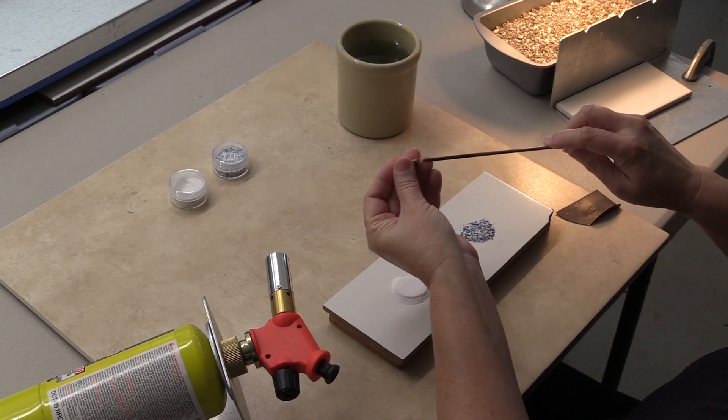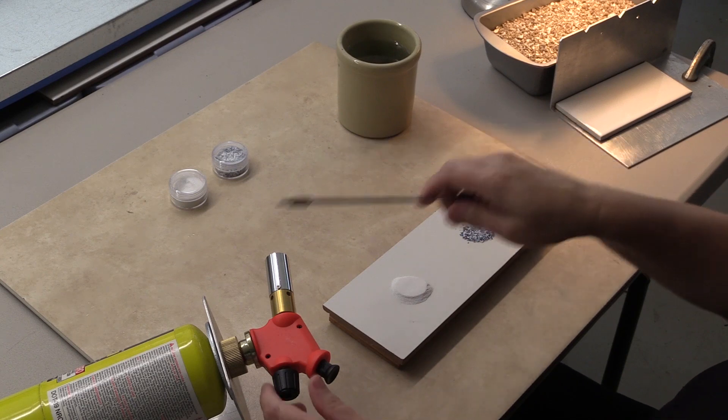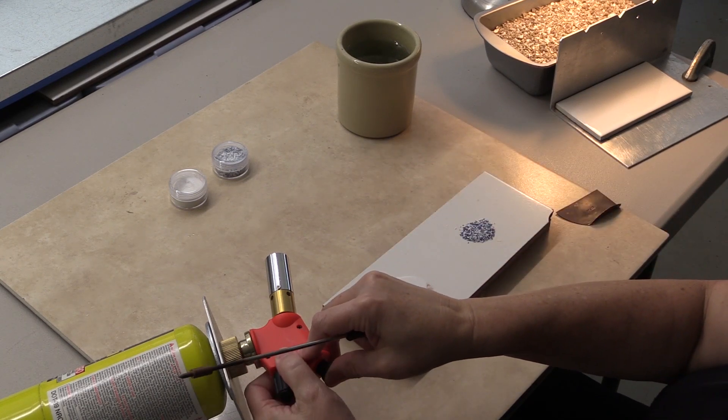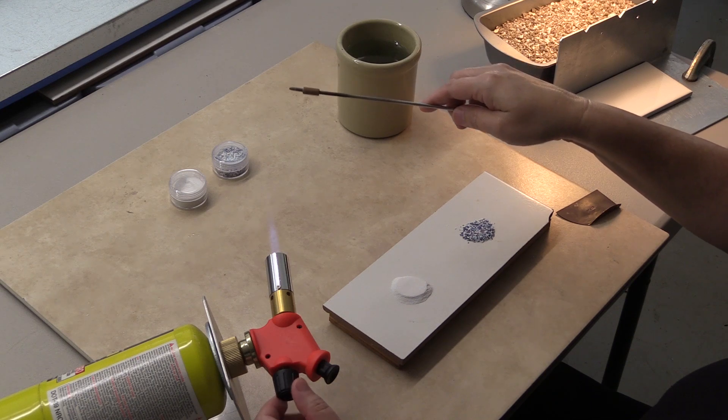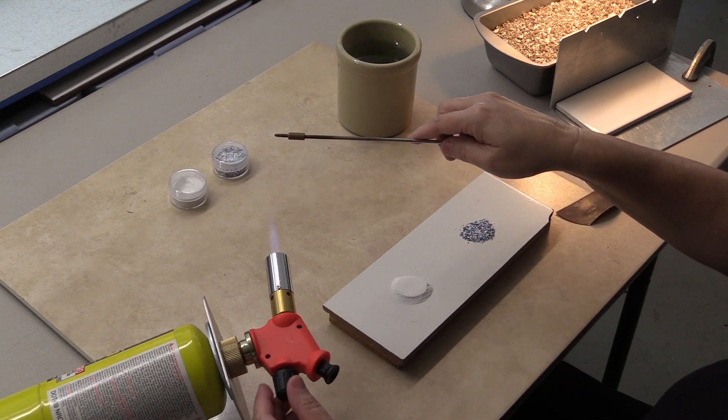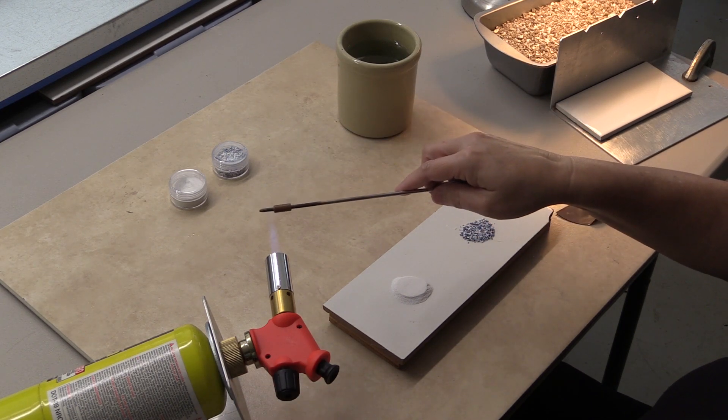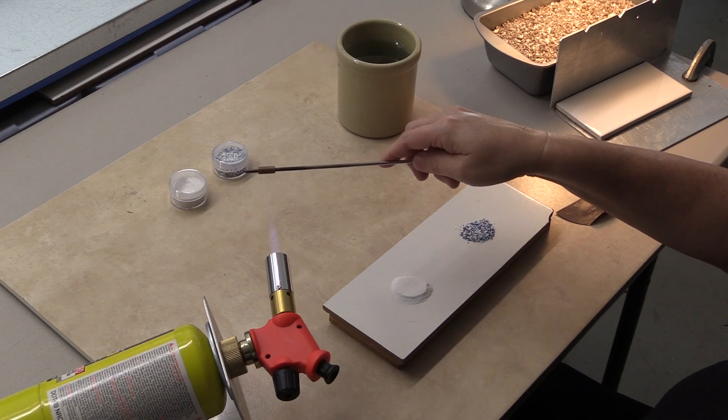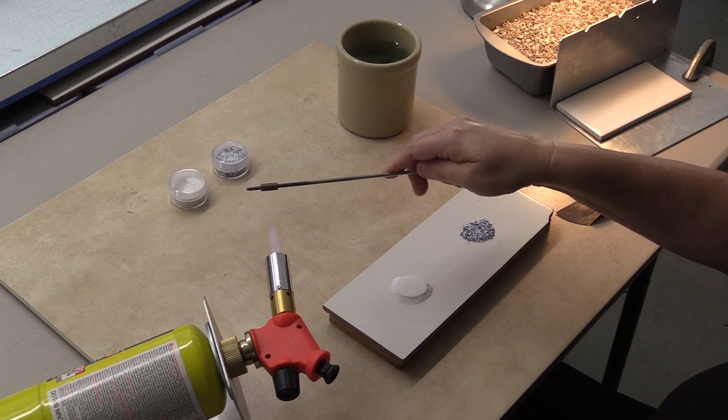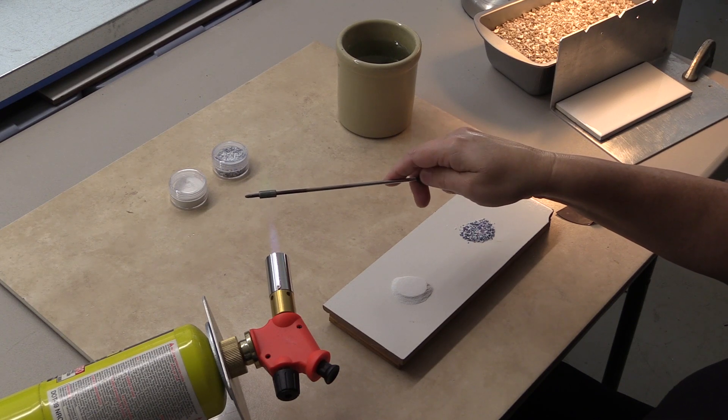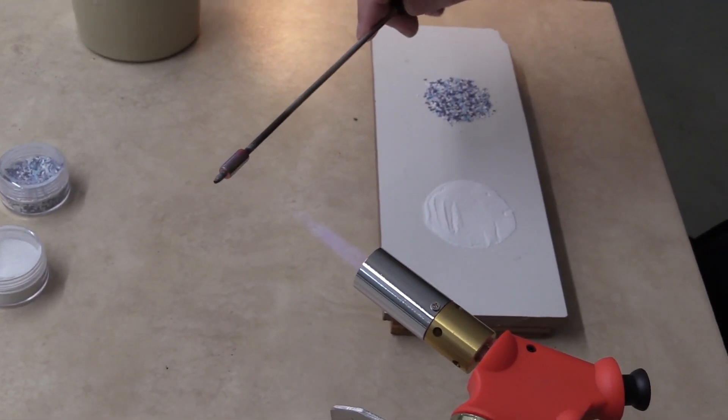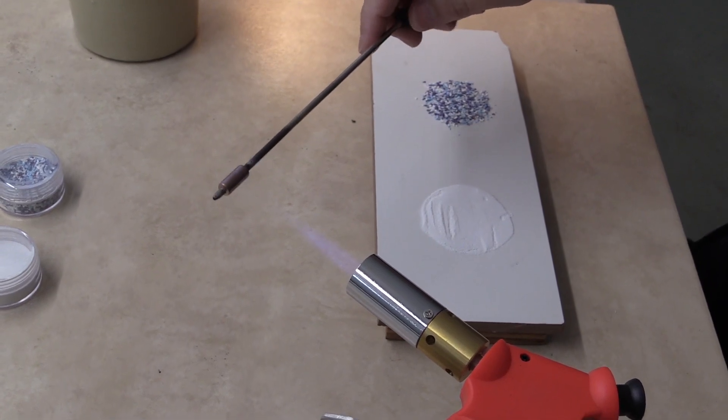We start by putting on the little bead. I like my torch flame to be about one to one and a half inches. I like to warm up the copper bead until it gets an orange-red color.